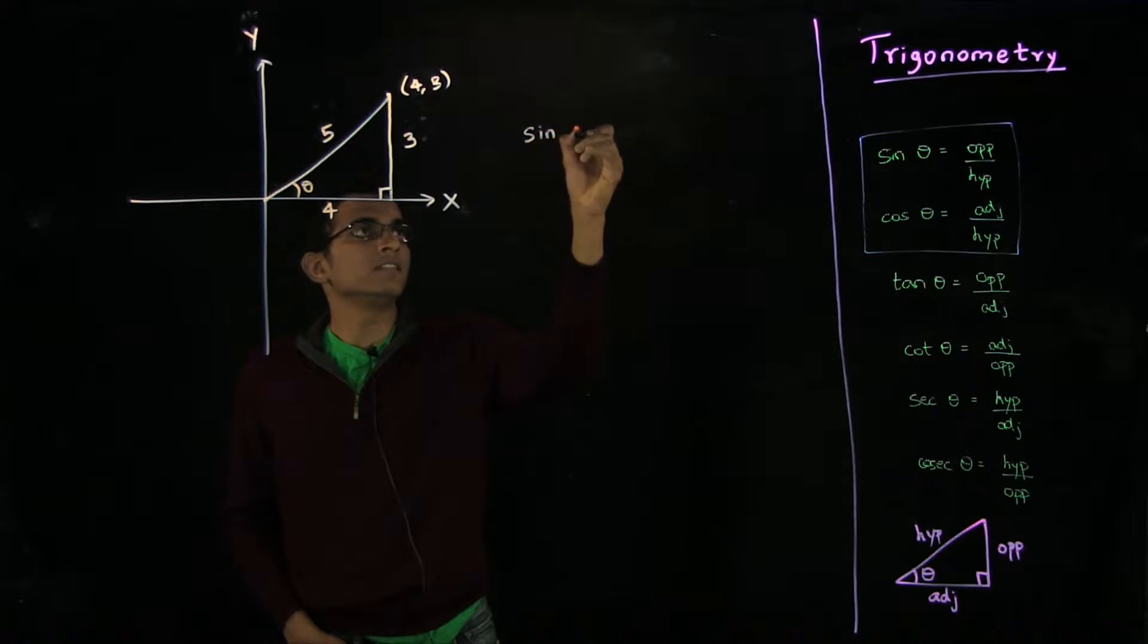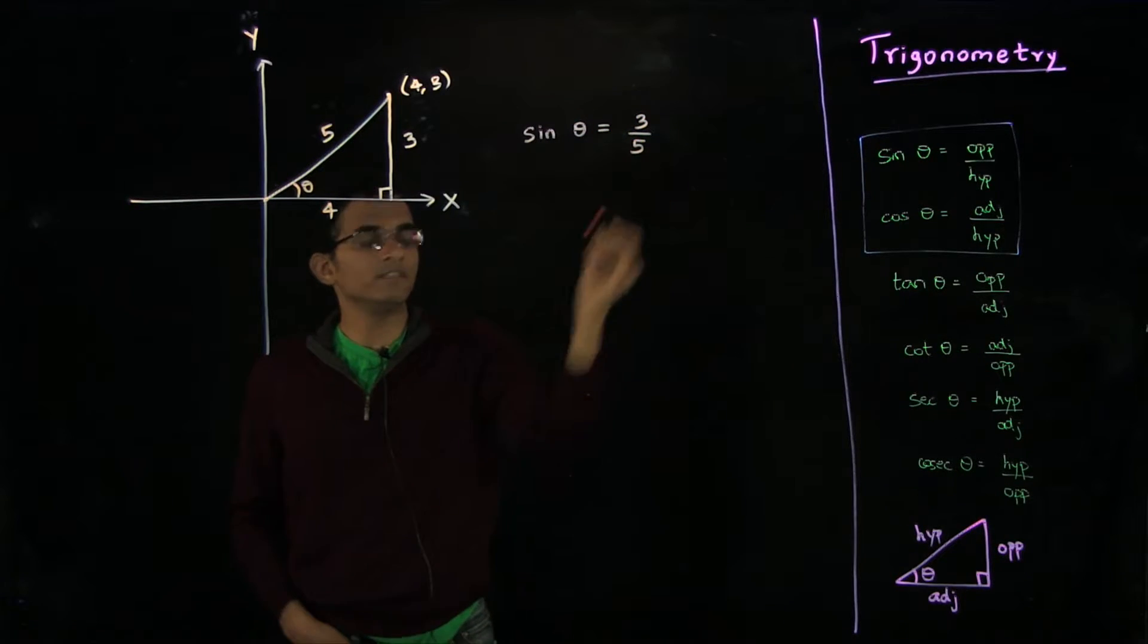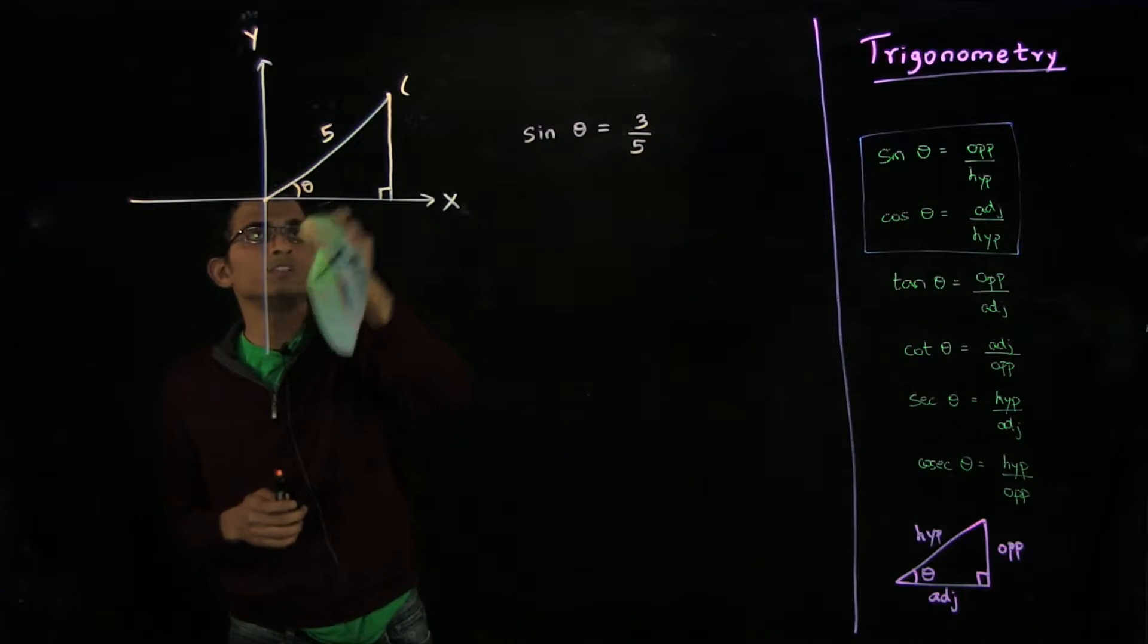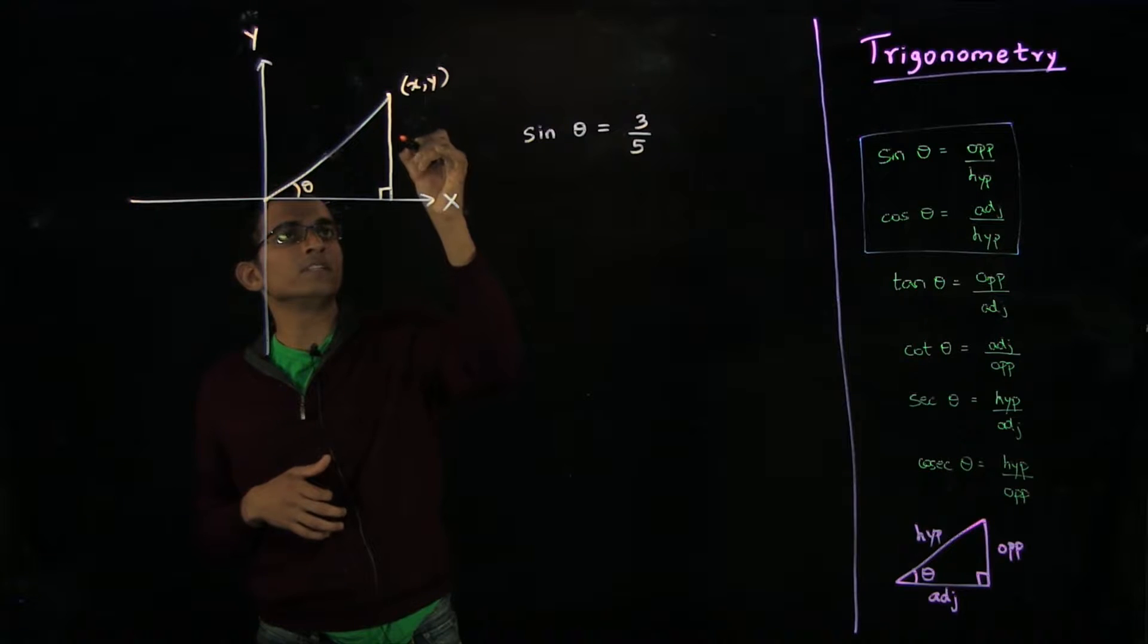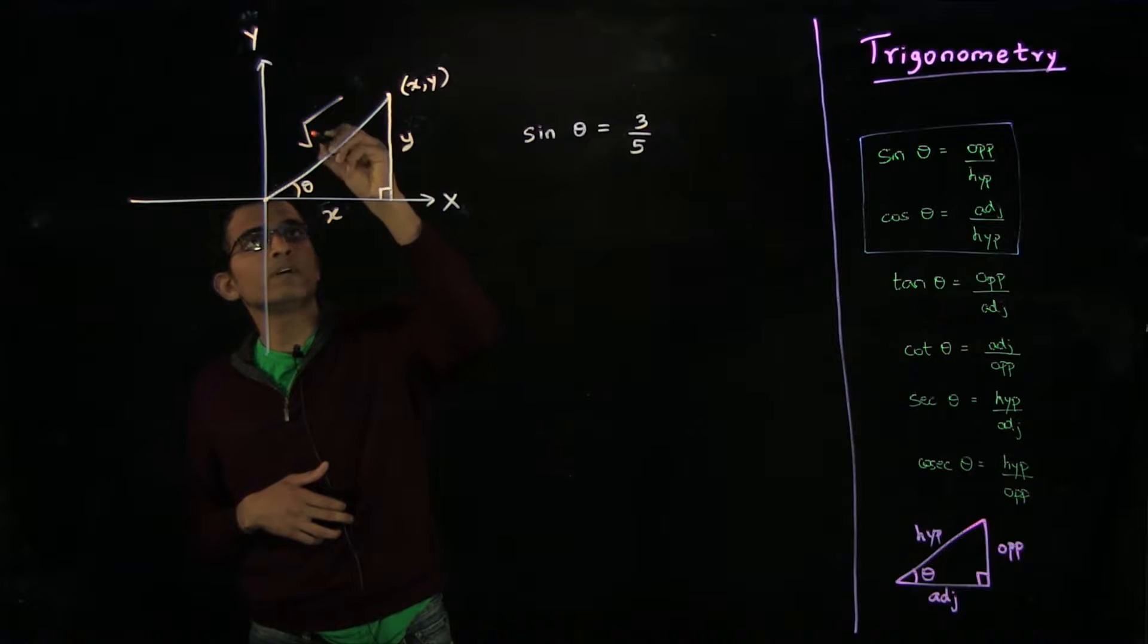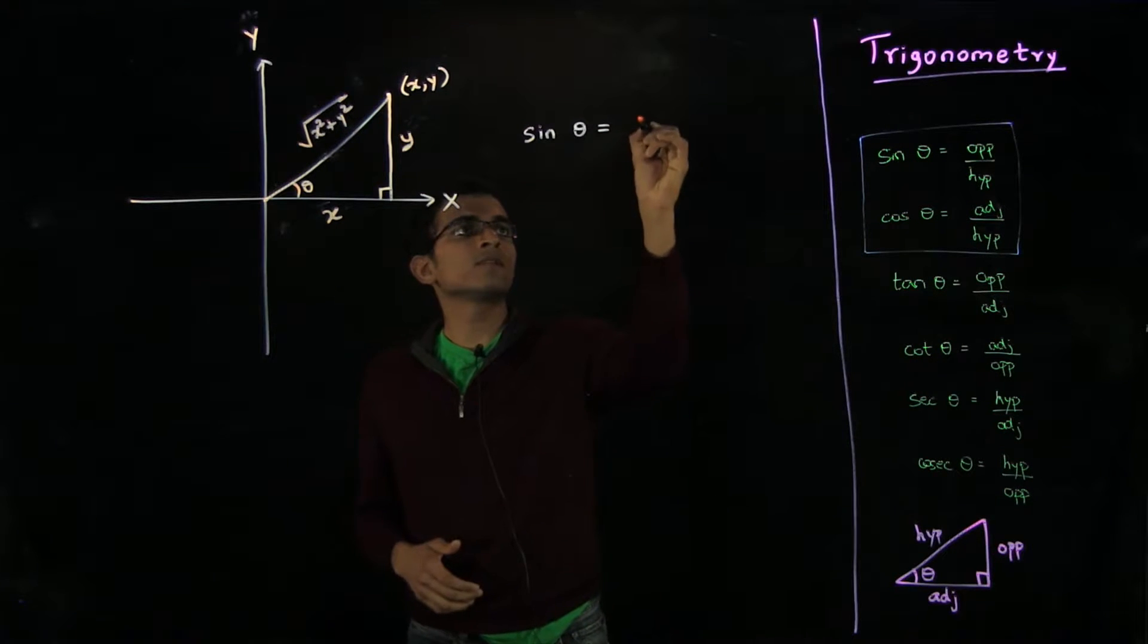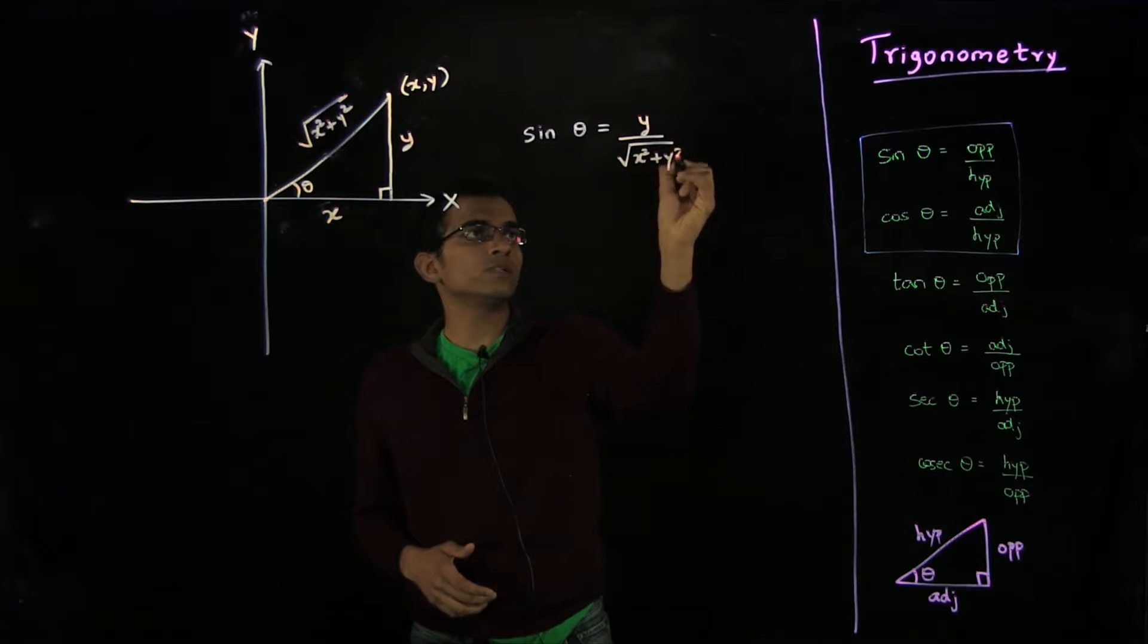Now if we think of this angle θ, from our definitions, sin θ is 3 divided by 5. But more generally, if my point was not (4,3), let's say it was the point (x,y) where this is y and this length is x and the hypotenuse is √(x² + y²), then the sine of the angle will be by definition y over √(x² + y²).